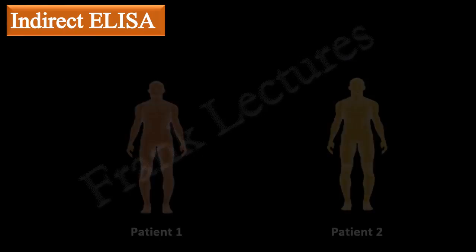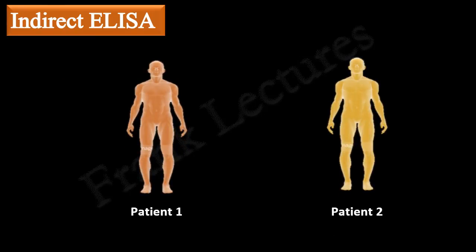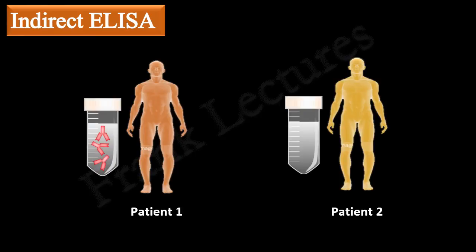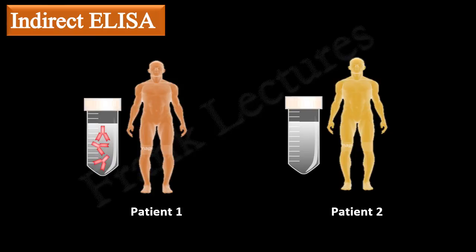Suppose we want to detect and confirm the presence of particular antibodies in the serum of the patients. These are two serum samples from two different patients. Antibodies of interest are present in serum of patient 1, and absent in serum of patient 2. Other antibodies may also be present in these serum samples, but we are not showing them here.